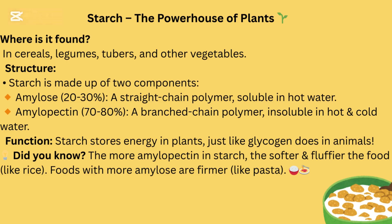Starch — the powerhouse of plants. It is found in cereals, legumes, tubers, and other vegetables. Structure: starch is made up of two components — amylose (20 to 30 percent), a straight-chain polymer soluble in hot water, and amylopectin (70 to 80 percent), a branched-chain polymer insoluble in hot and cold water. Function: starch stores energy in plants, just like glycogen does in animals. Did you know? The more amylopectin in starch, the softer and fluffier the food, like rice. Foods with more amylose are firmer, like pasta.